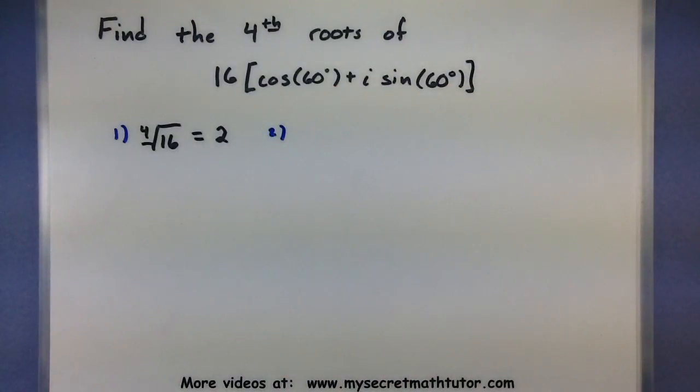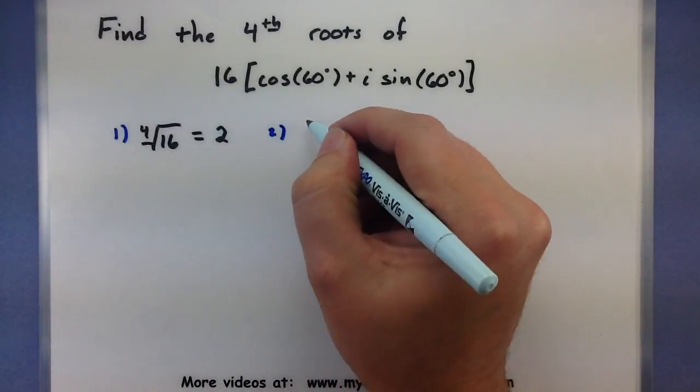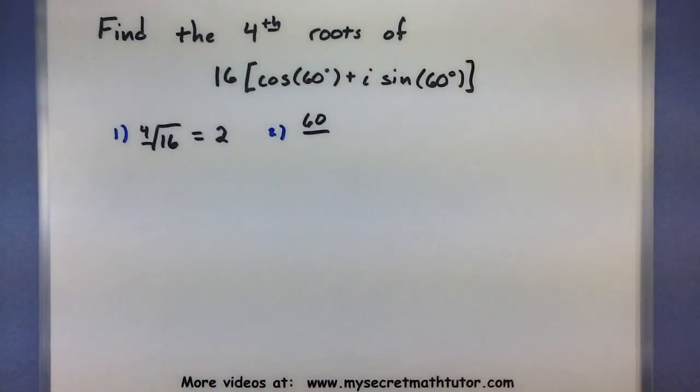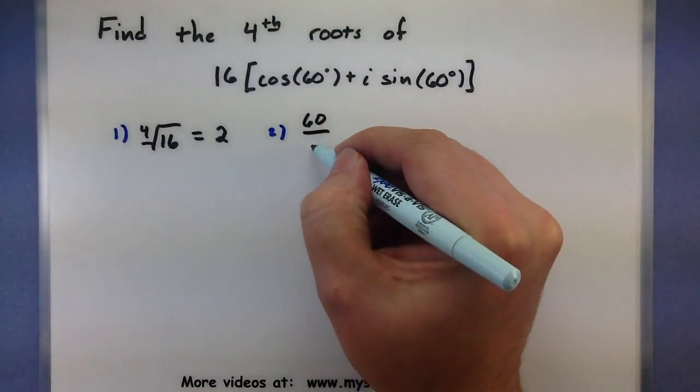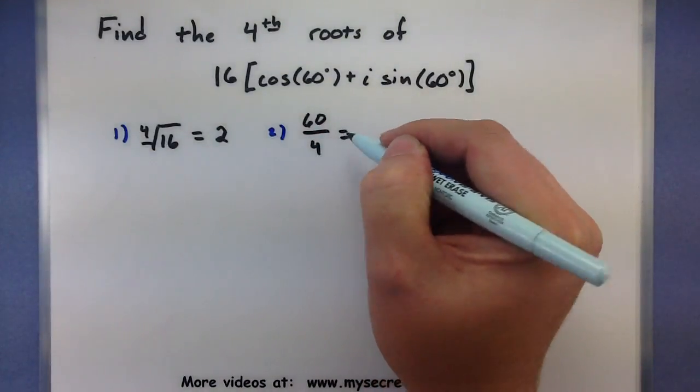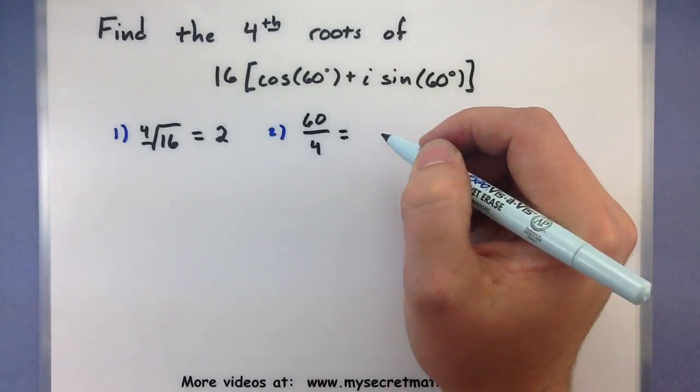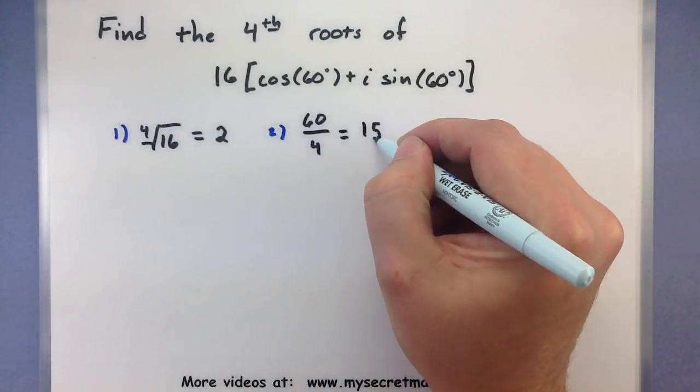I want to take the angle, whatever it is, and divide it by the index of the root. So, our angle right now is 60, and the index of my root, since I'm finding the fourth root, is 4. We'll take 60 divided by 4. Well, that's the same as 30 over 2, or 15 degrees.